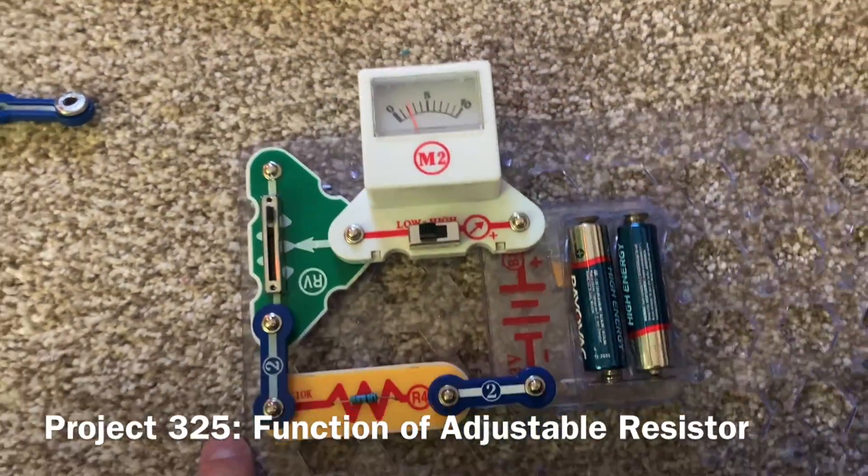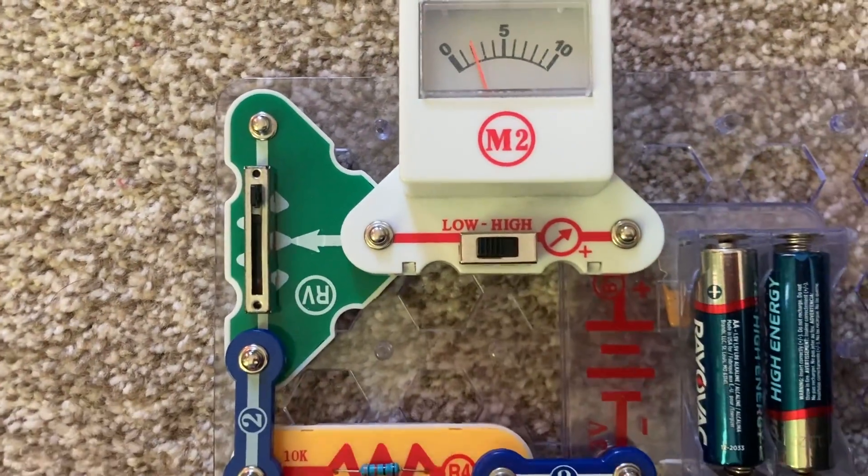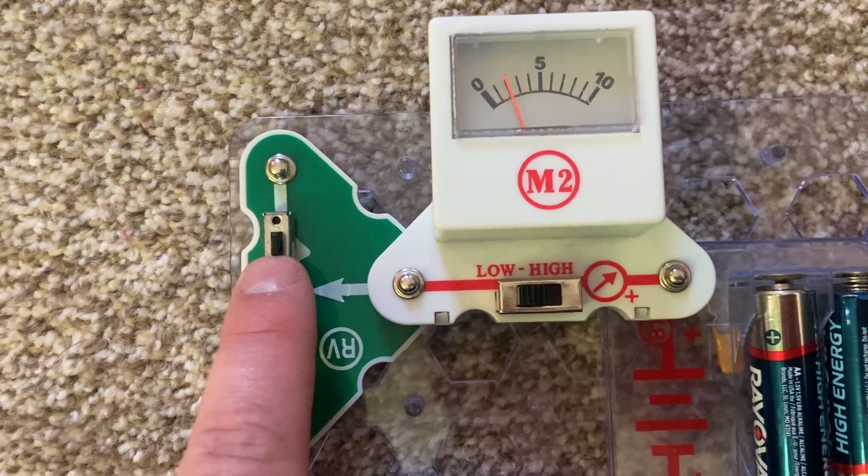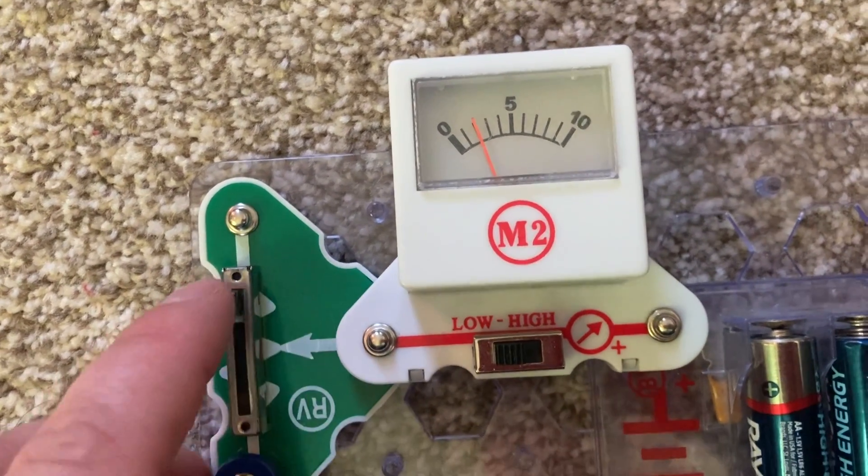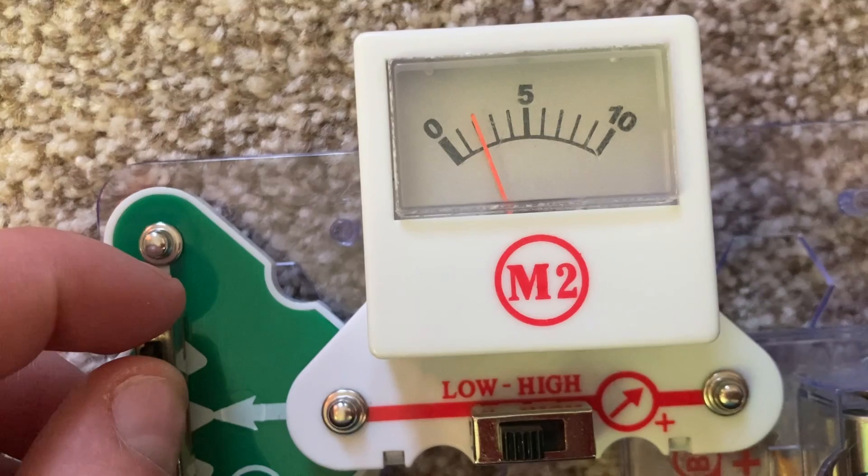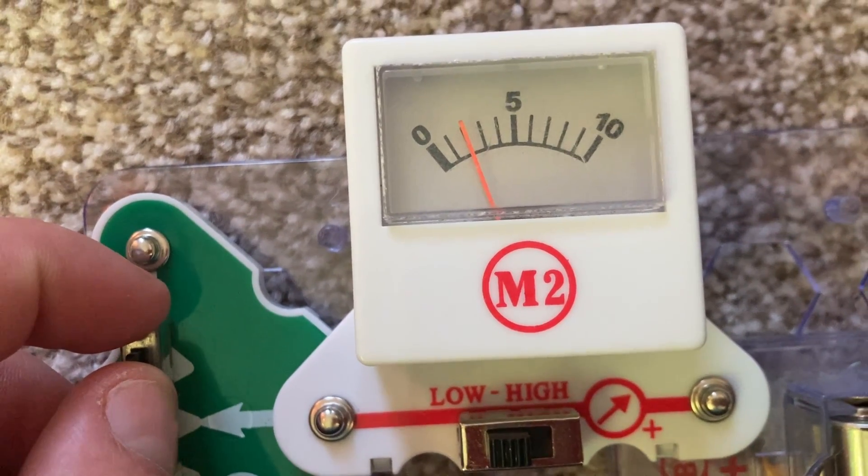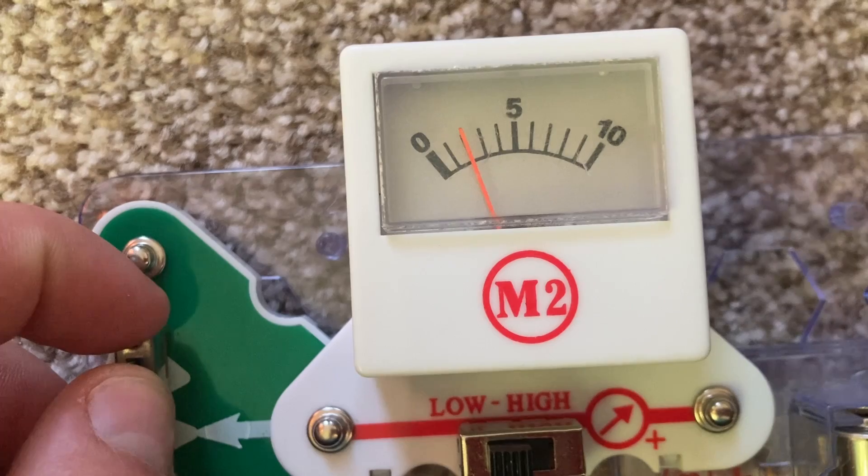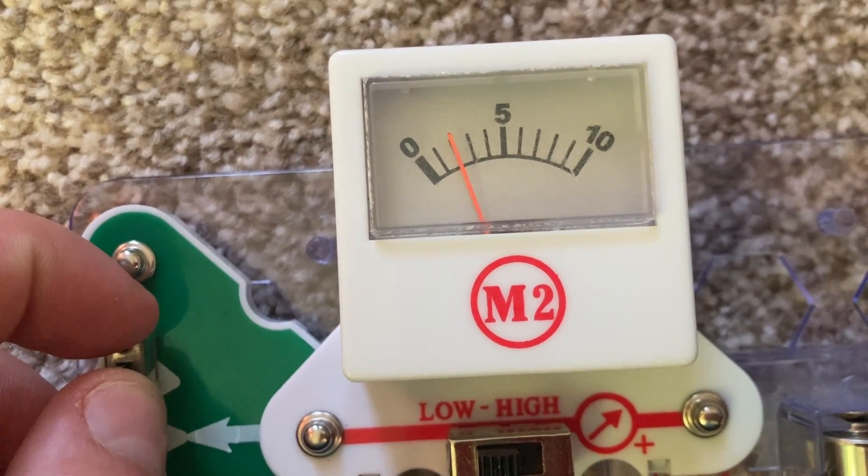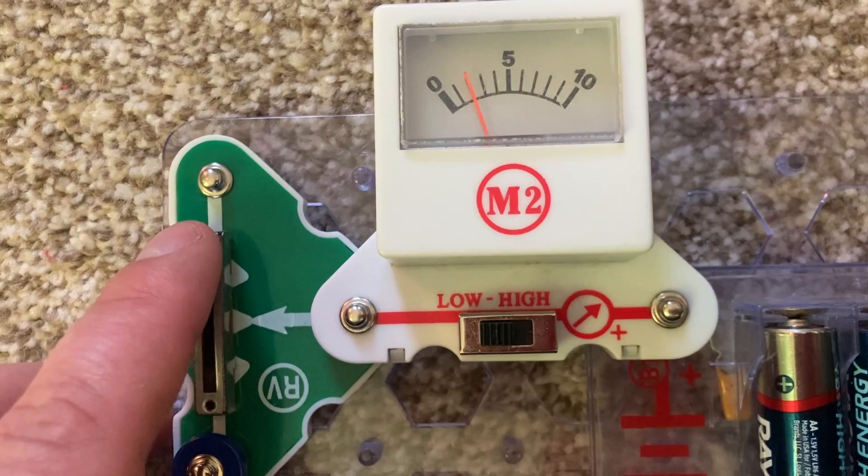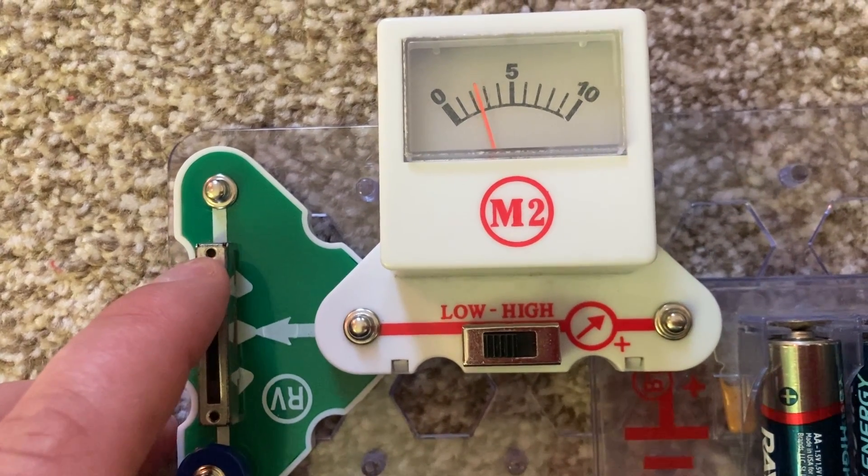Here, you can determine how the adjustable resistor or RV works by moving its lever when it is hooked up to the voltage meter. Right now, it reads about 2 milliamps.